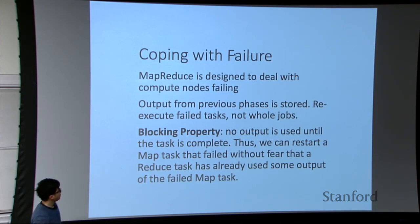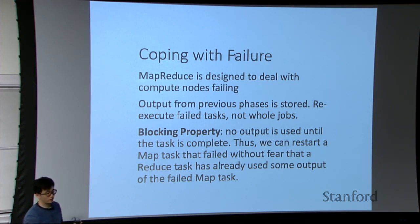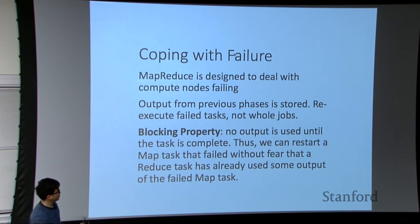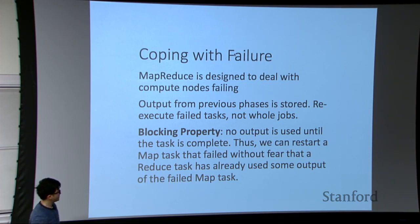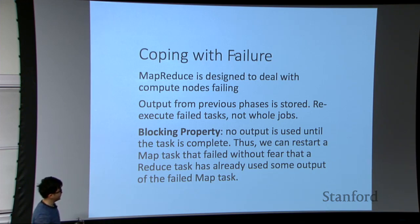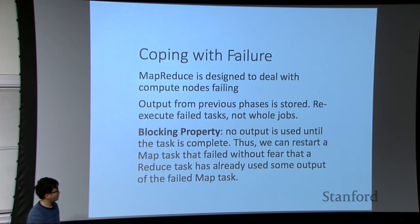One important thing about MapReduce is how it deals with failures. MapReduce is designed for computing nodes with failures. The output from a previous phase is stored so you can restart a task without restarting the whole job. To ensure the reduce task produces the right results, there is a blocking property: no output from a failed map task will be used for the reduce task. We simply restart the map task and only use correct outputs.